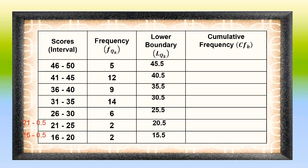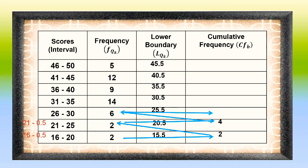The next thing to do is compute for the less-than cumulative frequency, beginning from the first class, which has the smallest lower and upper limit. We copy the frequency of the first class to its cumulative frequency column. After that, the cumulative frequency of the first class is added to the frequency of the class above it: 2 plus 2 equals 4. Follow the same procedure: 4 plus 6 equals 10; 10 plus 14 is 24; 24 plus 9 is 33; 33 plus 12 is 45; and finally 45 plus 5 equals 50, which is the total number of frequency.